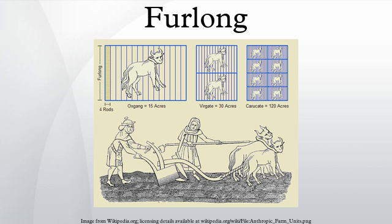In Myanmar, furlongs are currently used in conjunction with miles to indicate distances on highway signs. Mile posts on the Yangon-Mandalay Expressway use miles and furlongs. In the rest of the world, the furlong has very limited use, with the notable exception of horse racing in most English-speaking countries, including Canada and the United States. The distances for horse racing in Australia were converted to metric in 1972.